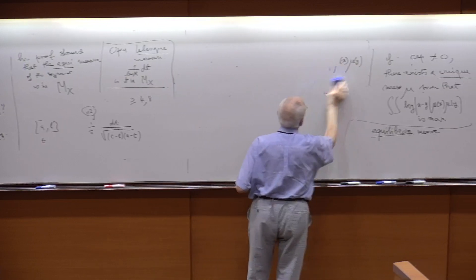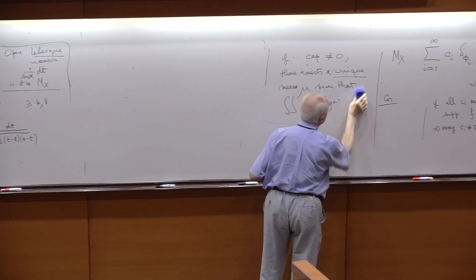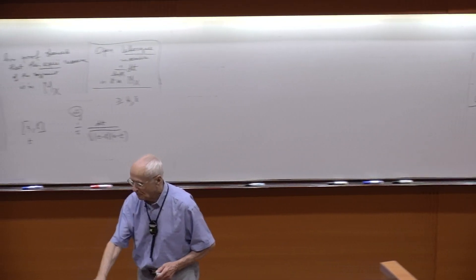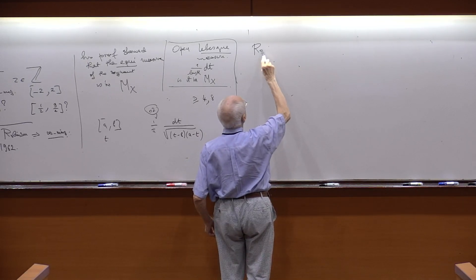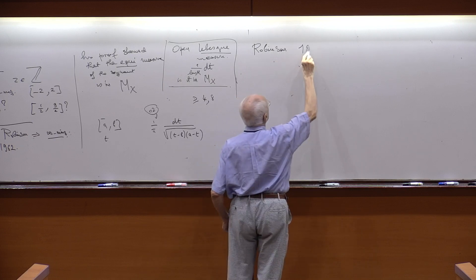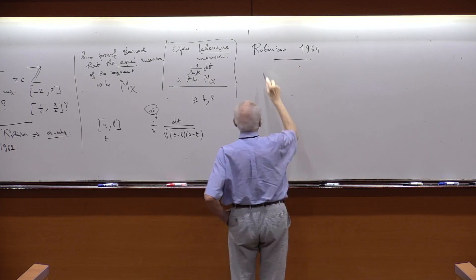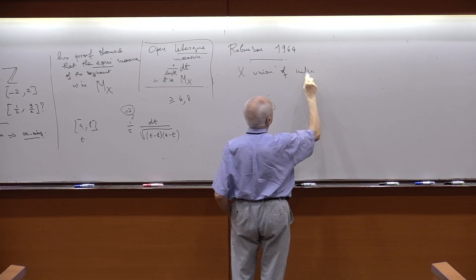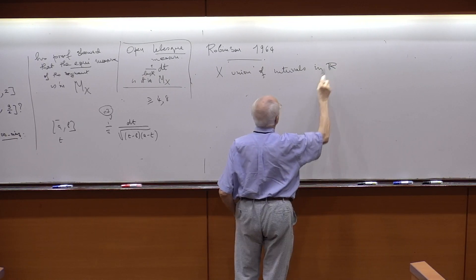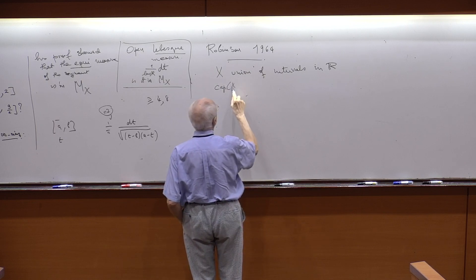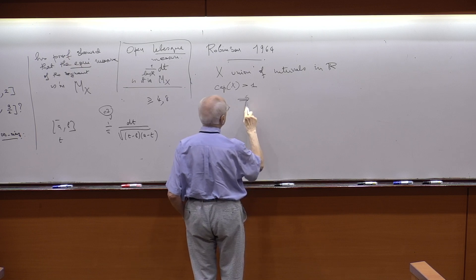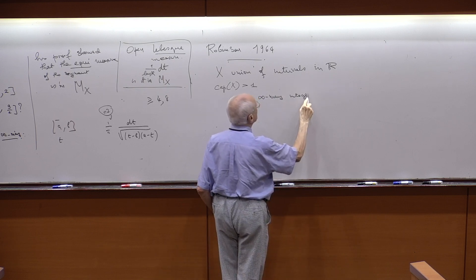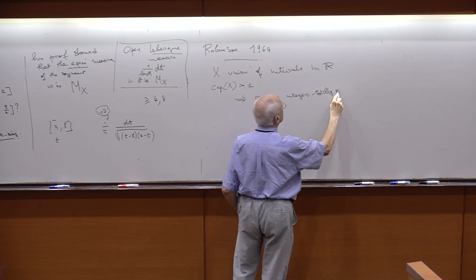Robinson's first theorem was for intervals. Two years later — I'm pretty sure it was 1964 — he solved something even more remarkable. He took X to be a finite union of intervals in R with capacity(X) > 1, and showed this implies there exist infinitely many algebraic integers totally in X.